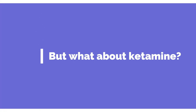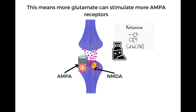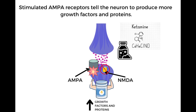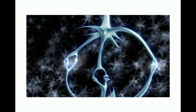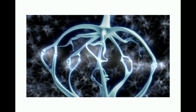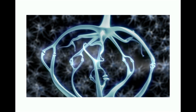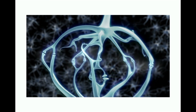Ketamine blocks NMDA receptors. This means more glutamate can stimulate more AMPA receptors. By stimulating more AMPA receptors, the neuron then produces more growth factors and proteins, which then increases the number of connections and the survival of the neurons. While this is a very simplified explanation, it gives you an idea of how ketamine might work.